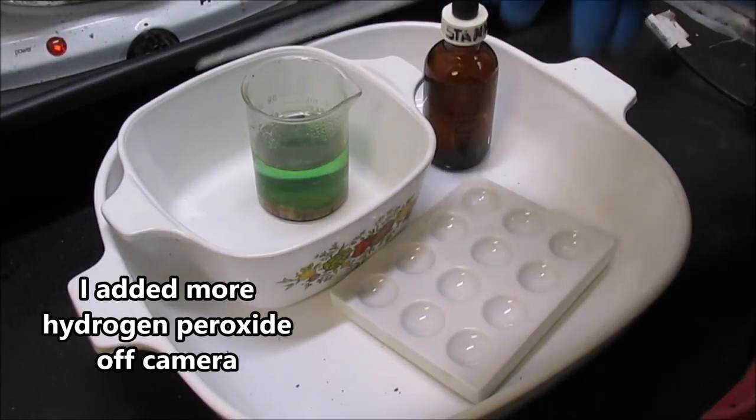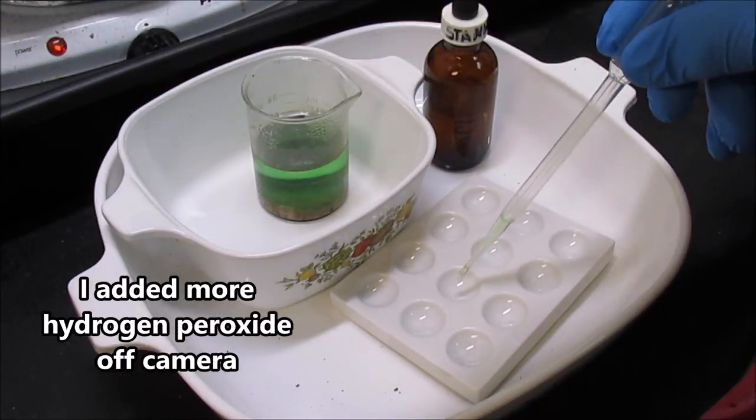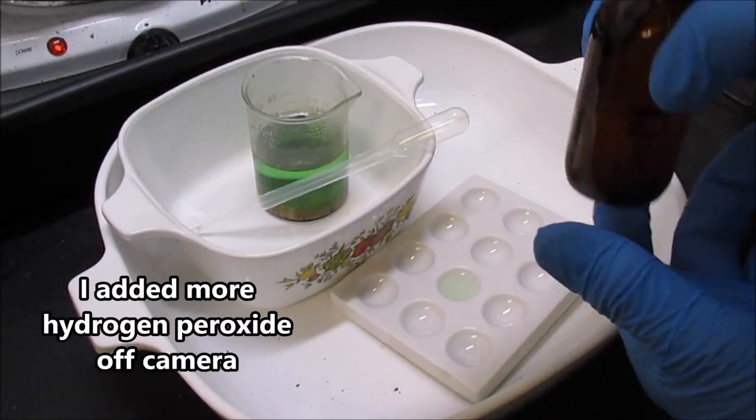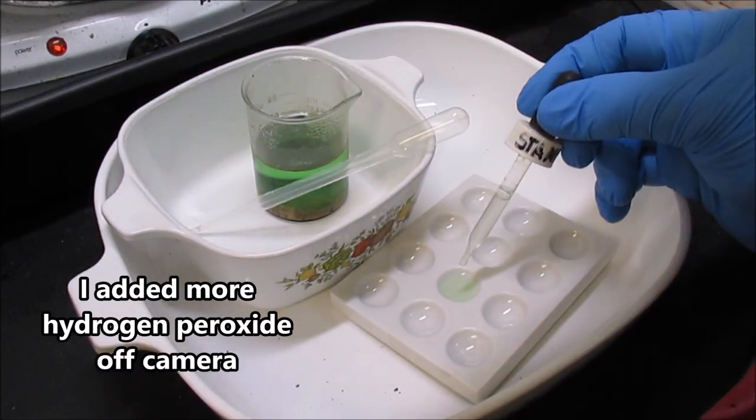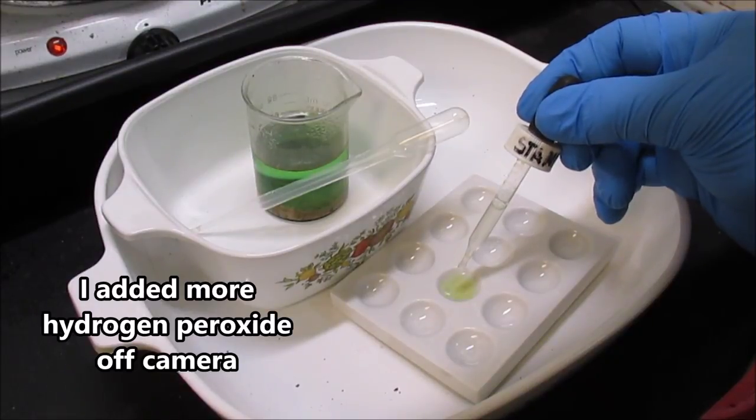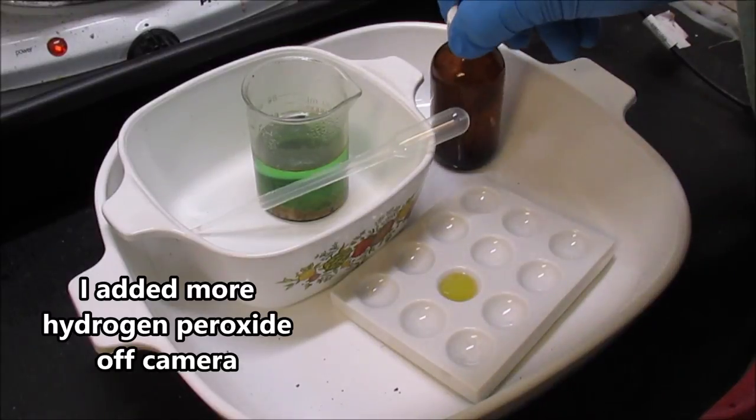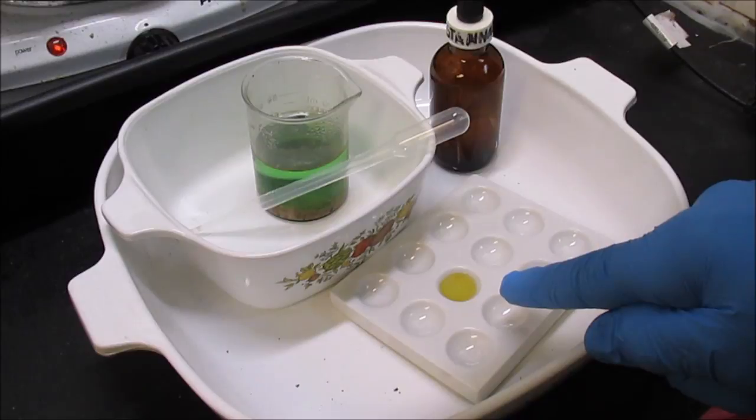Now I'm going to test our piranha solution, see if I got metals going in solution. Put some in a spot plate here, got some stannous chloride testing solution, a few drops of that in there. And as you can see that piranha solution caused some metals to go into solution, looks like platinum, probably some palladium with it.